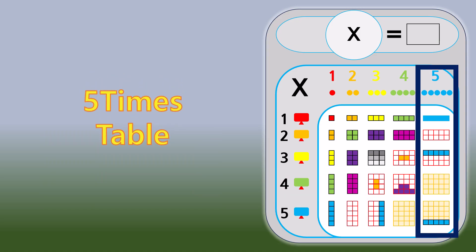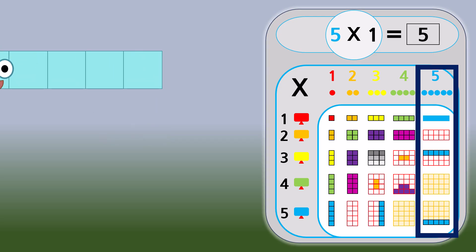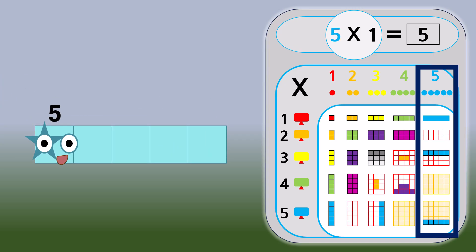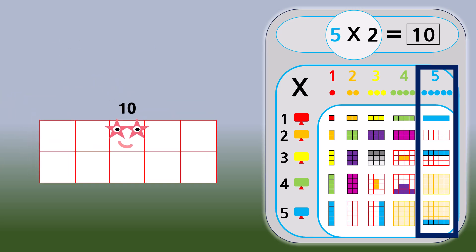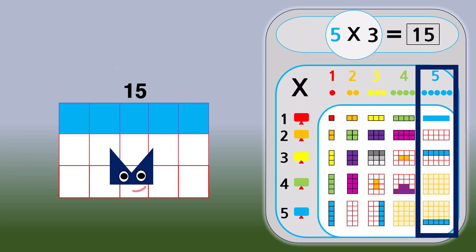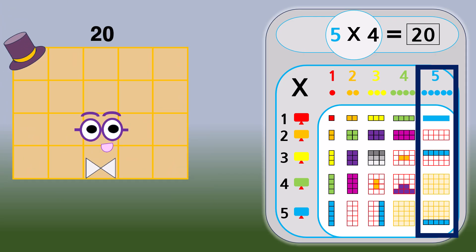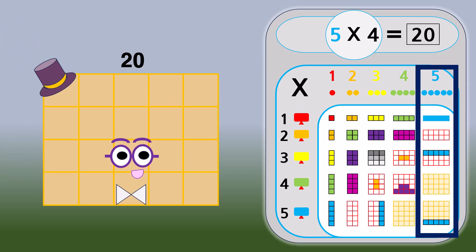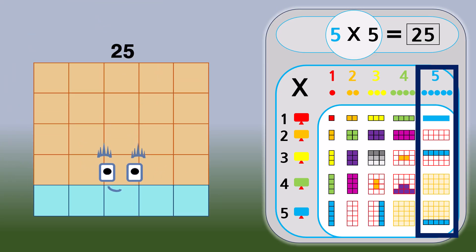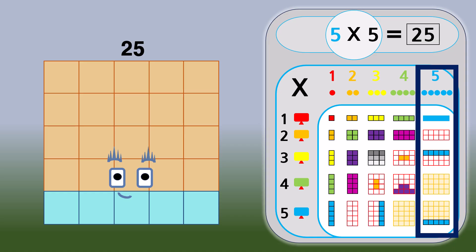5 times table. 5 times 1 equals 5. 5 times 2 equals 10. 5 times 3 equals 15. 5 times 4 equals 20. 5 times 5 equals 25.